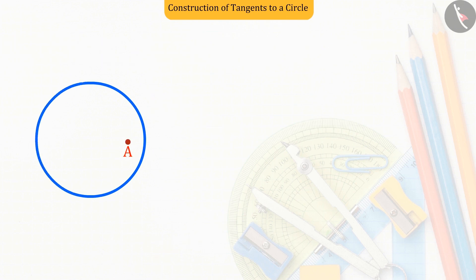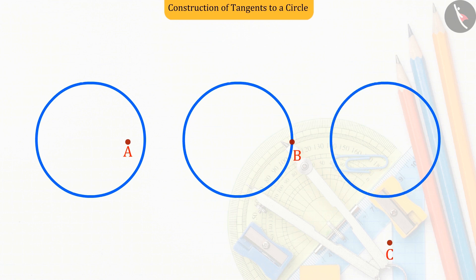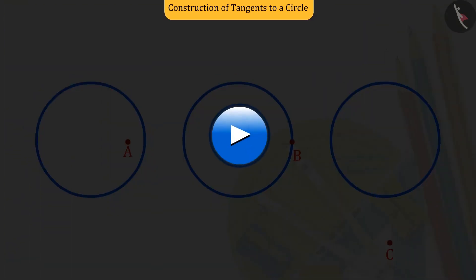Can you tell what will be the number of tangent lines drawn from the point to the circle in each case? To try yourself, pause the video and then match your answer.